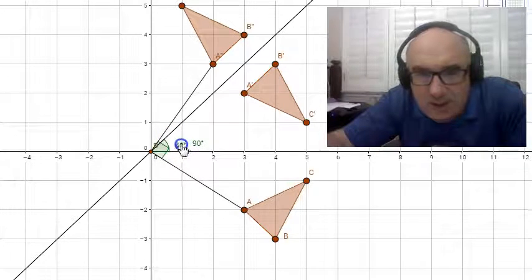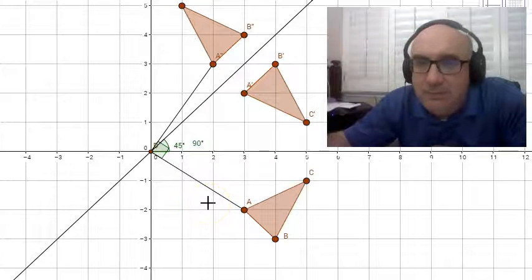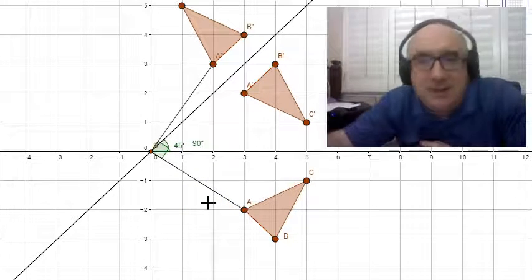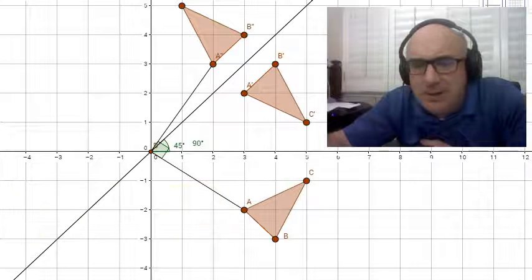So the original angle was 45, but when we double reflected over it, we got 90. Go figure. I wonder what's going on there.